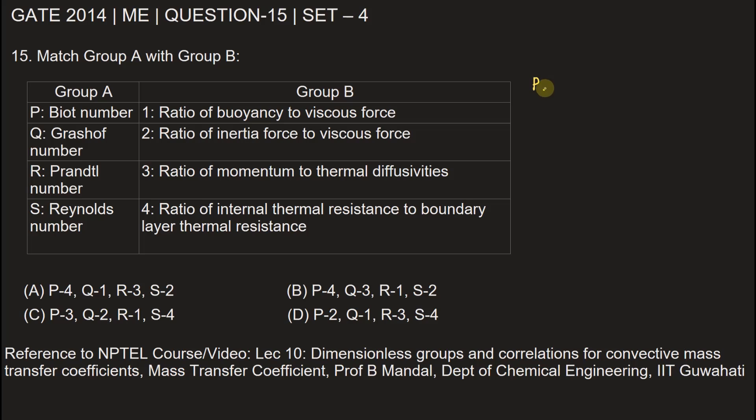The first one is P, Biot number. Biot number is the ratio of conductive resistance within the body to convective resistance at the surface. Biot number Bi is given by HLC by K, which represents conductive resistance by convective resistance. Convective resistance is at the surface, and conductive resistance is within the body.